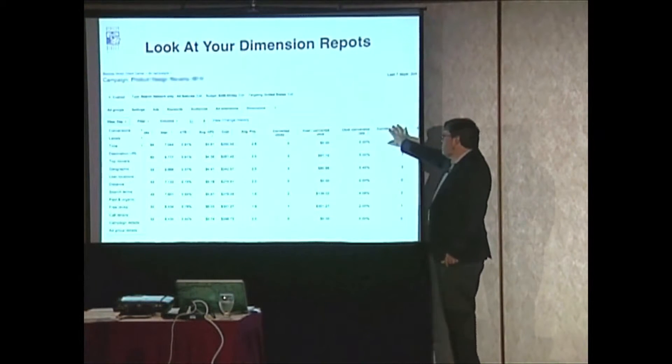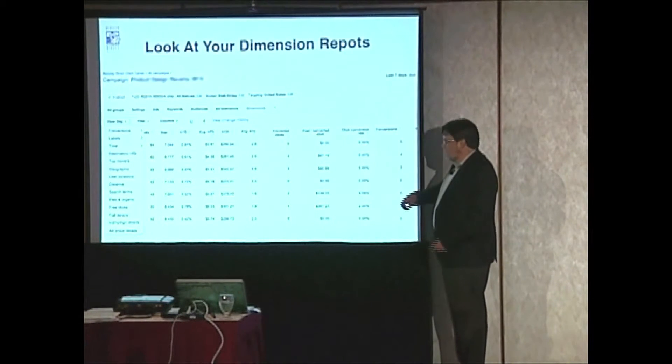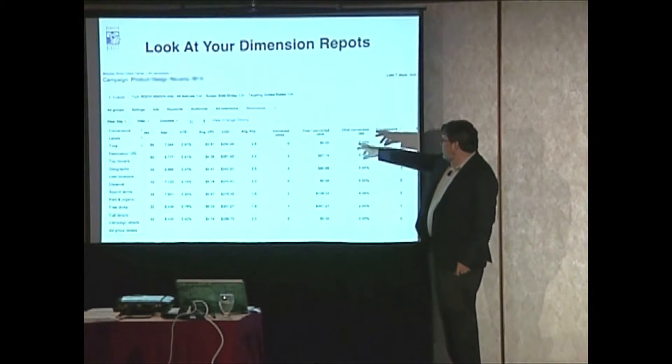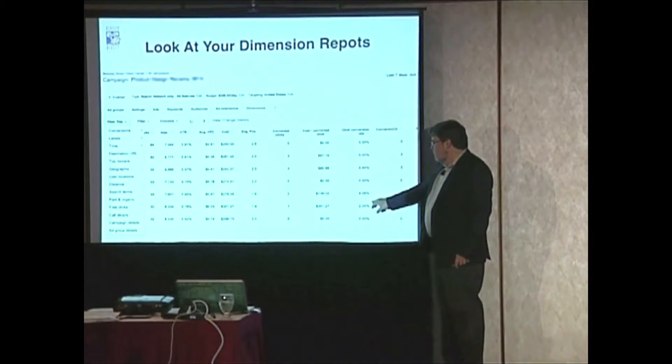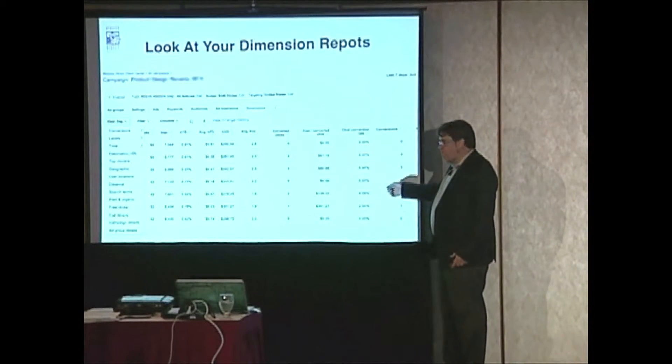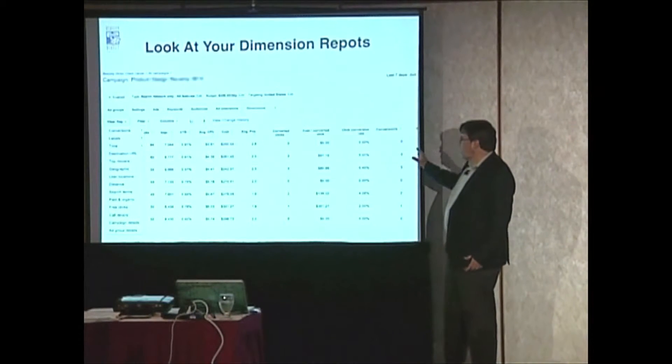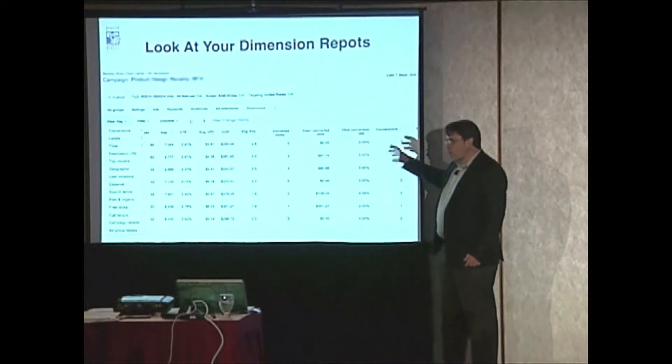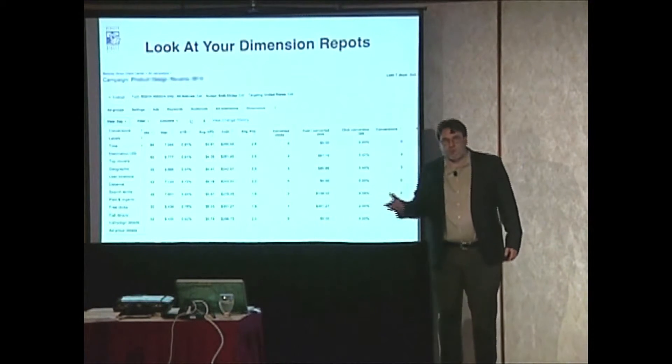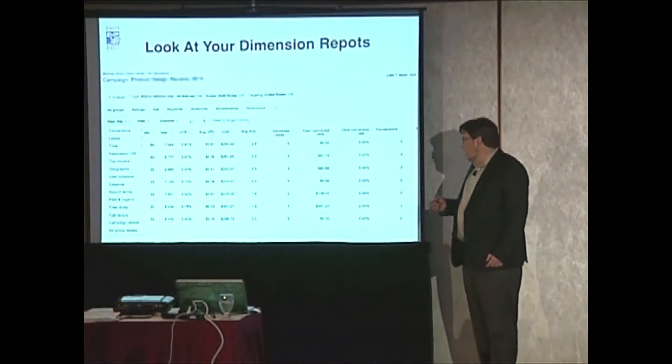You can also pick the columns you want to display. The column chooser is right here - that's on every tab within the interface. Right now you can see converted clicks, cost per converted click, and conversion rates. You can also do view-through conversions, call details, impression shares - lots of different columns as your default reporting column in any tab.